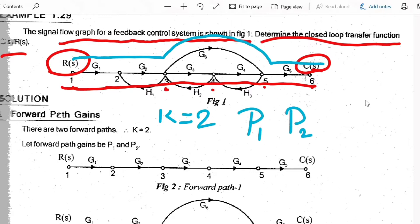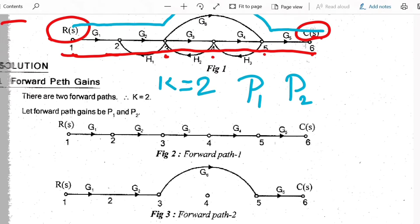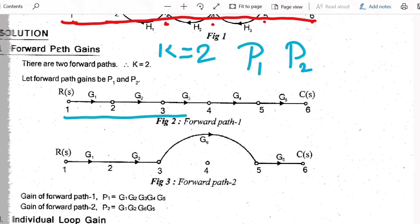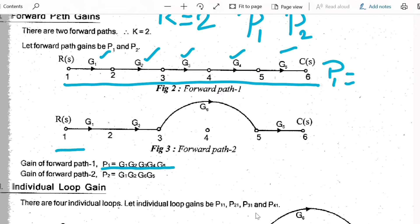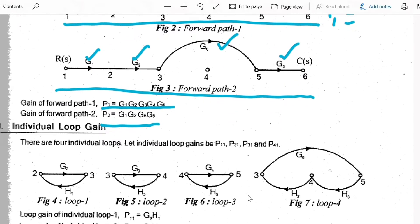Obviously we have two forward path gains, P1 and P2. Now draw the first forward path and write the forward path gain P1 equal to multiplication of all the gain values: G1·G2·G3·G4·G5. Then draw the second forward path. The second forward path has gains P2 equal to G1·G2·G6·G5. First step completed.